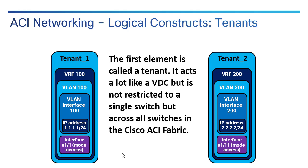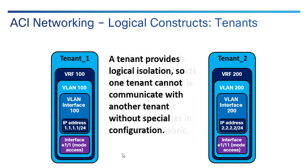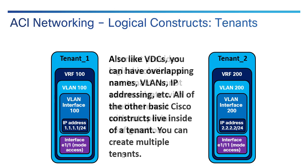One thing that's different, though, is a VDC lives on an individual Nexus switch, while in ACI, tenants live across the entire collection of switches, which is called the ACI fabric. Tenants provide logical isolation — one tenant cannot communicate to another without special configuration, just as VDCs can't communicate without an interconnection. And like VDCs, you can have overlapping names, VLANs, and IP addressing. You're not limited to eight — you could do hundreds or thousands depending on the hardware and software.